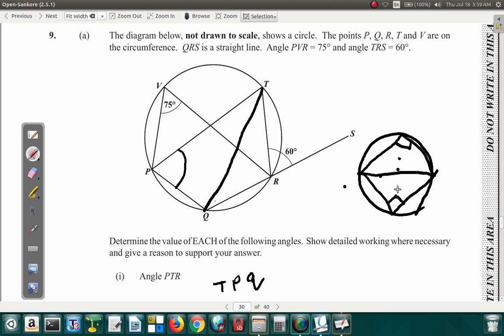In alternate segments, remember, the cord cuts the circle into two segments. In this case, one up here, the other here. In alternate segments, they add up to 180 degrees.